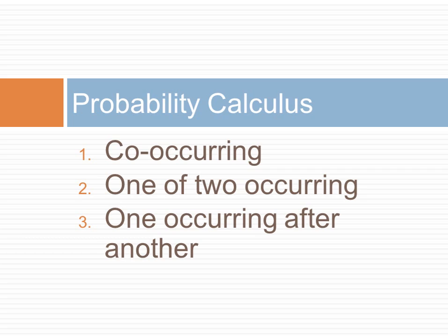In particular, we talk about how to calculate the probability of two events co-occurring, or one of two events occurring, or one event occurring after another.